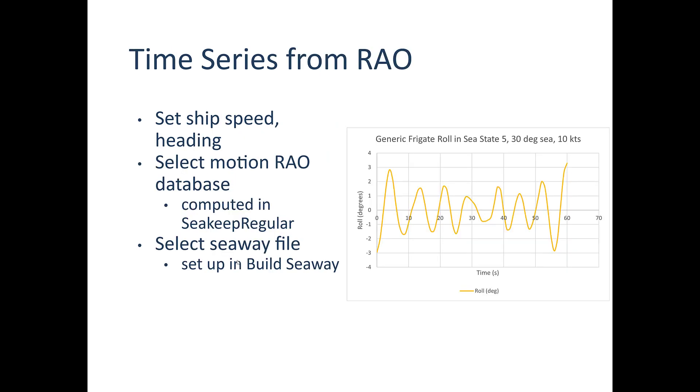So TimeSeriesFromRAO, this is an application that's used for generating, like it says, a time series signal of ship motion. But you have to have already computed the motion RAO in SeakeepRegular. The nice thing about this is that it's nice looking at frequency domain information generally, but sometimes it's also handy to have a time series to look at and potentially even use in some other kind of application or for some other calculation process. You'll need to get a seaway file constructed in BuildSeaway to drive the environmental inputs for this. And here you can see I've just made a quick plot in Excel of what the generic freight roll looks like in sea state 5 with a 30 degree offset sea direction and 10 knots forward speed.